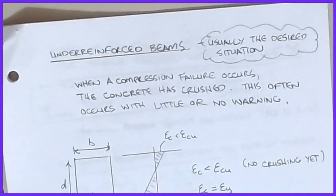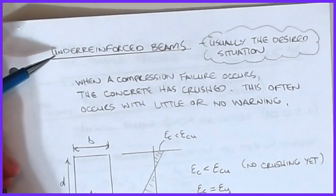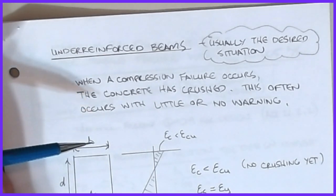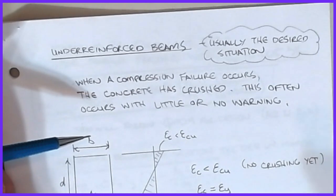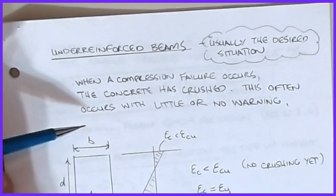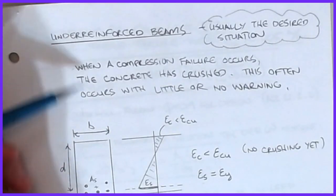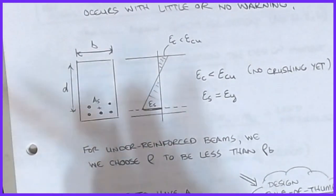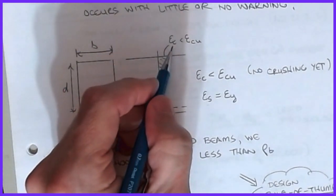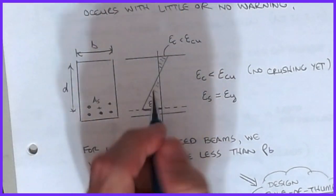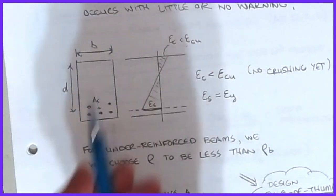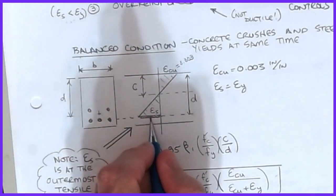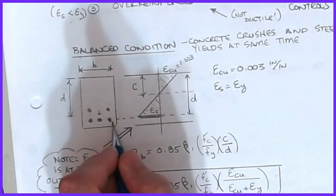Now let's look at under-reinforced beams. While the term 'under-reinforced' sounds dangerous, it's actually a good thing because it ensures ductile failure — the steel will yield and won't suddenly have a brittle fracture. It gives some warning before the beam comes down. This is the desired situation, as opposed to over-reinforced where the concrete crushes without warning. One thing to note: we're now measuring epsilon_s at the outermost steel location closest to the tension face, which ACI calls epsilon_T.